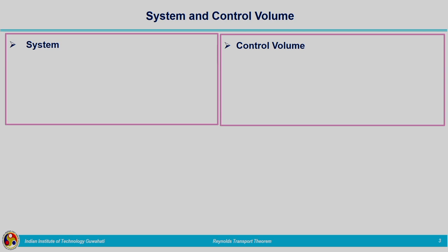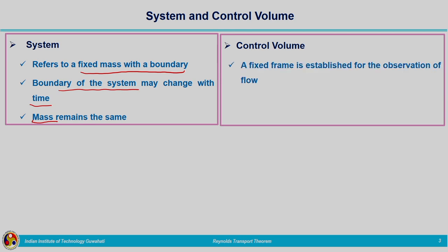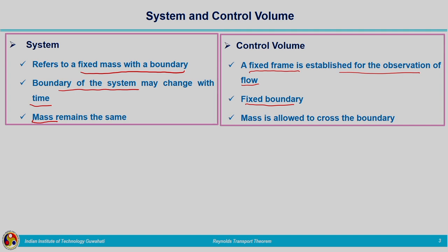Coming back to the system and control volume concept: a system refers to a fixed mass within a boundary. The boundary of the system may change with time — the system moves from one location to another as time changes — but the mass within the system remains the same. In the case of a control volume, we have a fixed frame established for the observation of flow. It has a fixed boundary, and the mass within the control volume will be changing because it is allowed to cross the boundary.